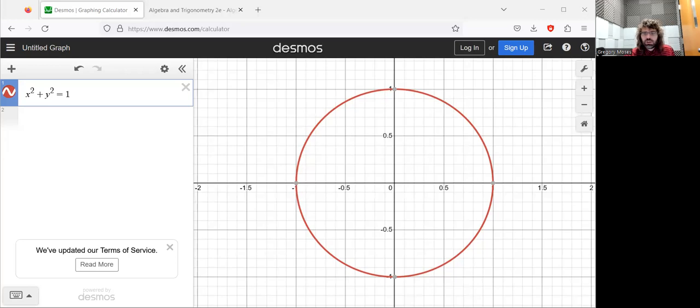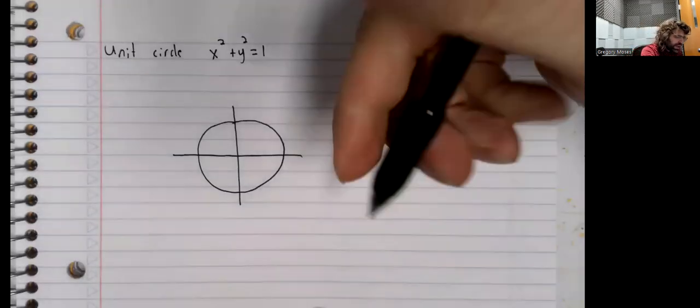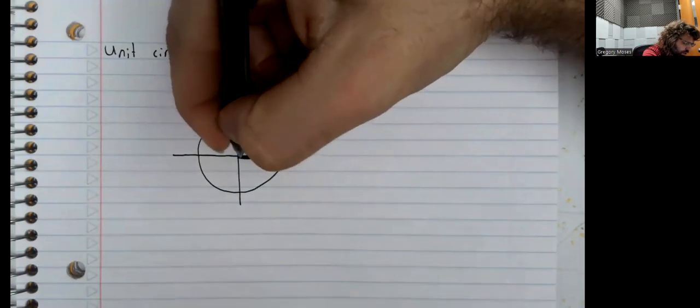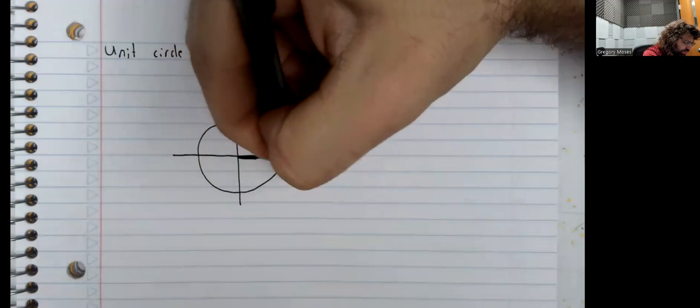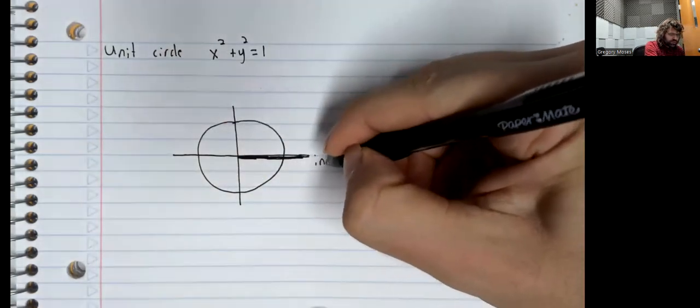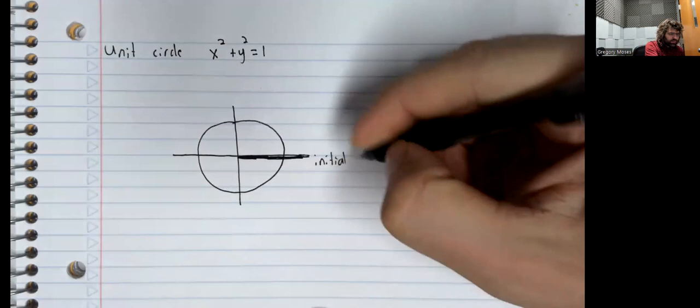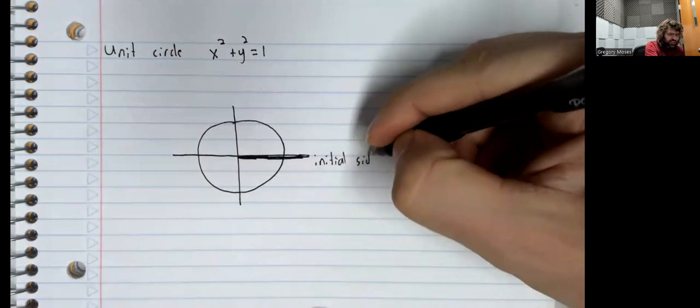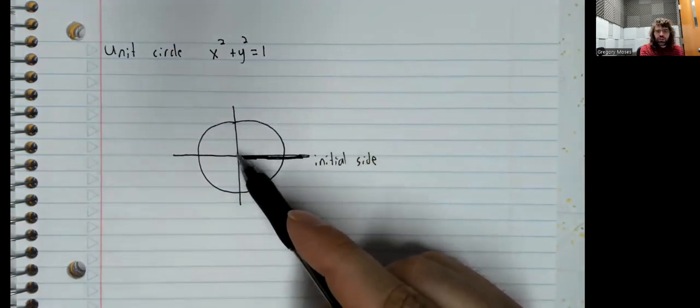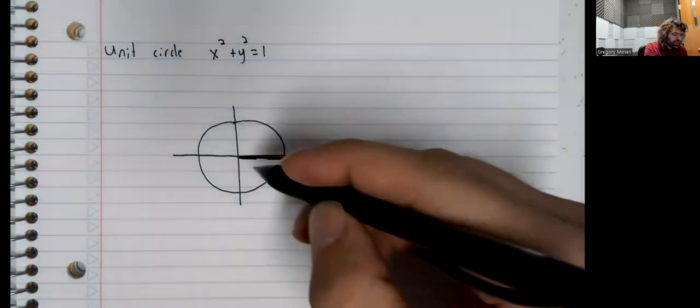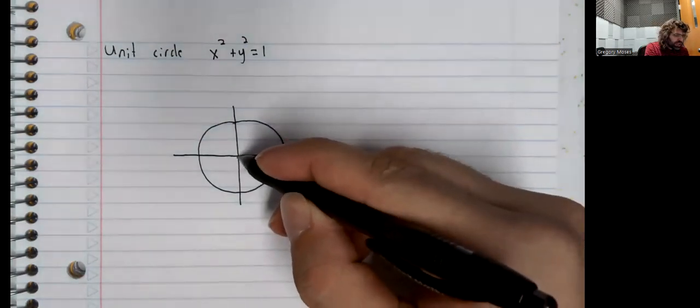And we're going to look at angles where the x axis is the initial side. And the origin is the origin of the ray. So we're going to look at angles.